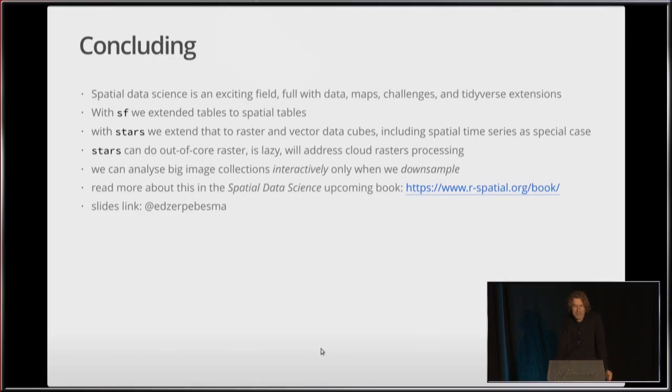So to conclude, spatial data science is an exciting field full with data, maps, challenges, and tidyverse extensions. With SF, the simple features package, we extend the tables to spatial tables. And with the STARS package, we extend that to raster and vector data cubes. And that includes spatial time series as a special case. STARS can do out of core raster, is lazy, does some optimizations there, and will eventually address also cloud raster processing, which is where everything is going in this world in terms of these data sizes to do something useful. We can analyze big image collections interactively only when we downsample cleverly, and there is more to read about the stuff that we do in the book that I'm writing together with Roger Bivand, called Spatial Data Science.